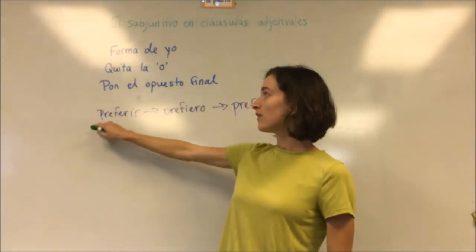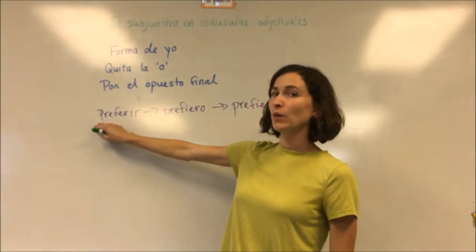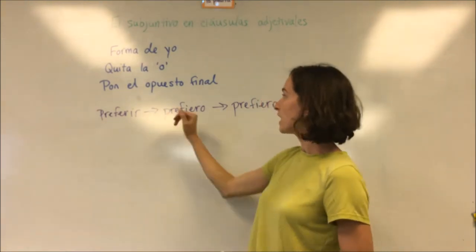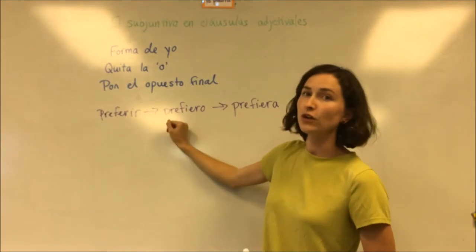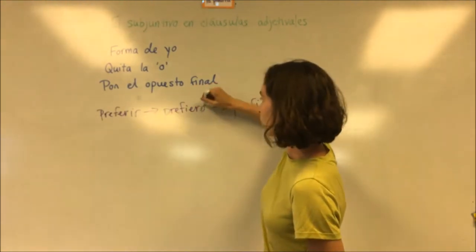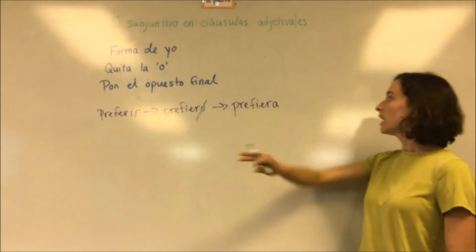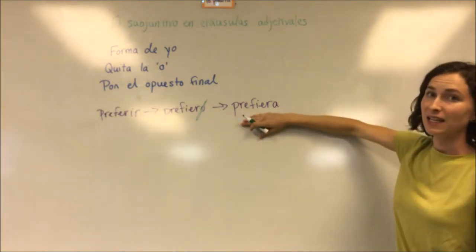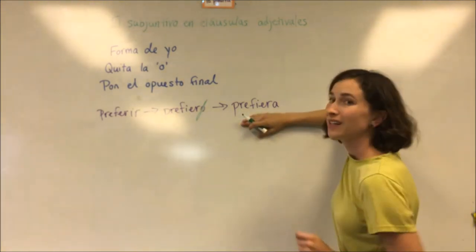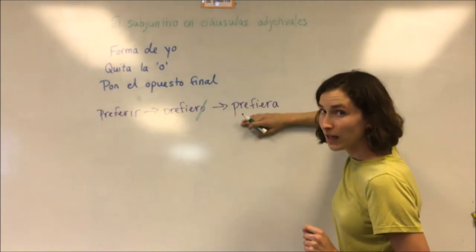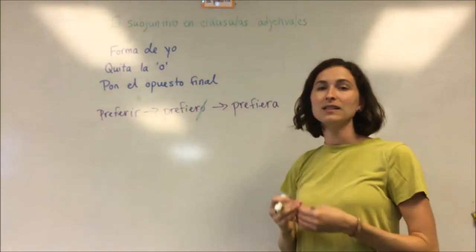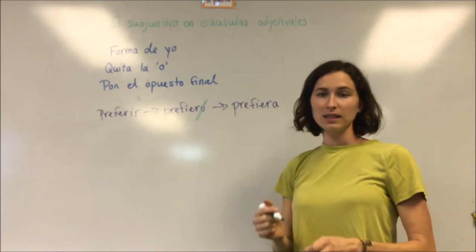So if we have the verb preferir and we want to know how to conjugate it in the subjunctive, we first conjugate it in the yo form — yo prefiero — we remove the o, and then we put on the opposite ending. It is an IR verb, so we're going to put an a on the end. So it would change to prefiera, prefieras, etc.